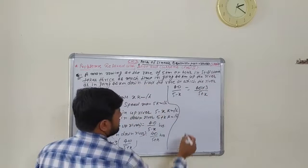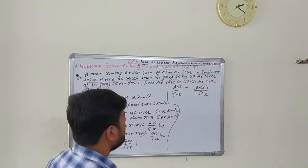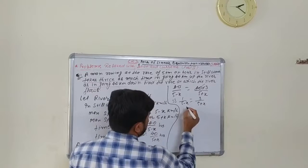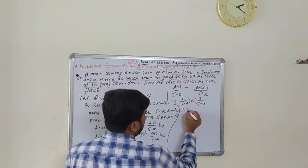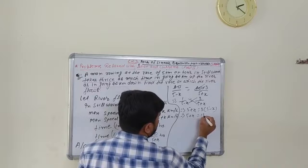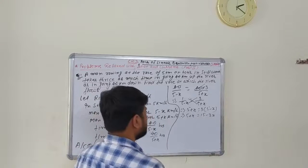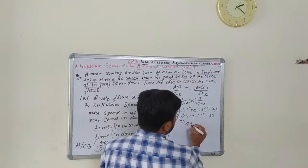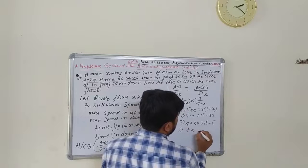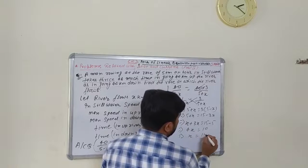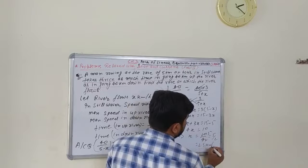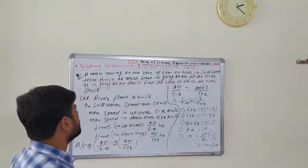Simplifying: 1/(5 minus x) = 3/(5 plus x). Cross multiplying: 5 plus x = 15 minus 3x. So 4x = 10, which gives x = 2.5 km per hour. This is the flow rate of the river. This was a slightly different type of question.